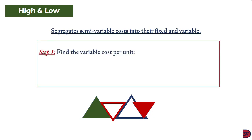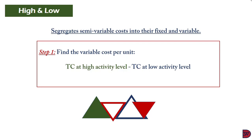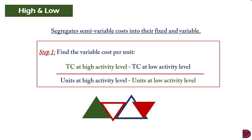Step one: find the variable cost per unit. We do this by taking the total cost at the highest activity level less the total cost at the lowest activity level, then dividing by the units at the highest activity level less the units at the lowest activity level. For abbreviations: TC stands for total cost.